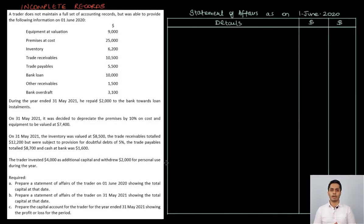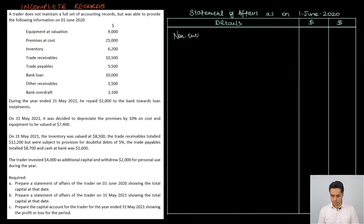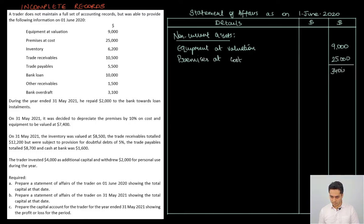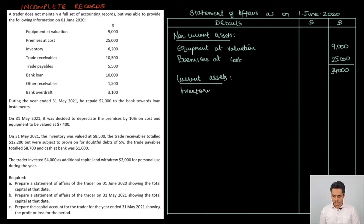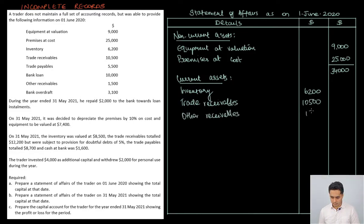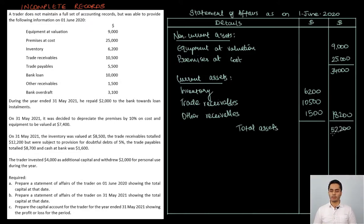The statement of affairs is prepared in a similar format to a balance sheet. Let's list down our assets — first the non-current assets, which are equipment and premises; the values are already given directly. The total of our non-current assets is 34,000. Then we list down our current assets, and finally we arrive at our total assets of 52,200.